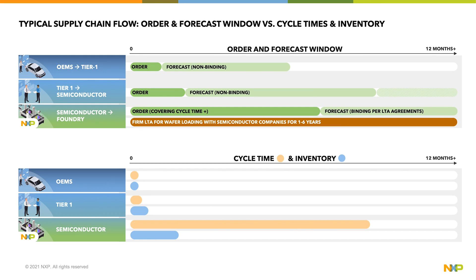Next, if you look at the chart on the bottom, you'll see the mismatch in cycle times and inventory being carried. OEMs and Tier 1s tend to manage the factories with a just-in-time methodology, which pushes all demand fluctuations downstream to semiconductor manufacturers. The net-net of this arrangement puts the risk of inventory and obsolescence on companies like NXP and does not share the burden of holding inventory across the entire supply chain.